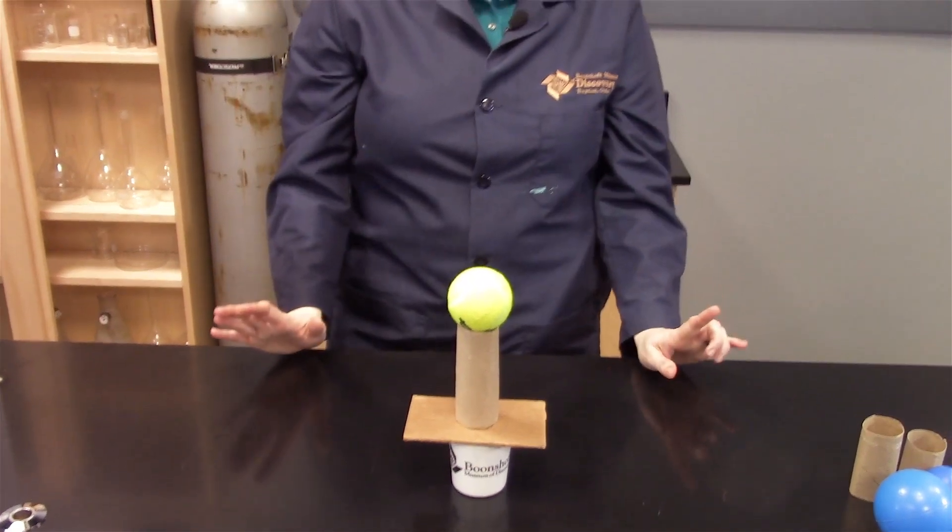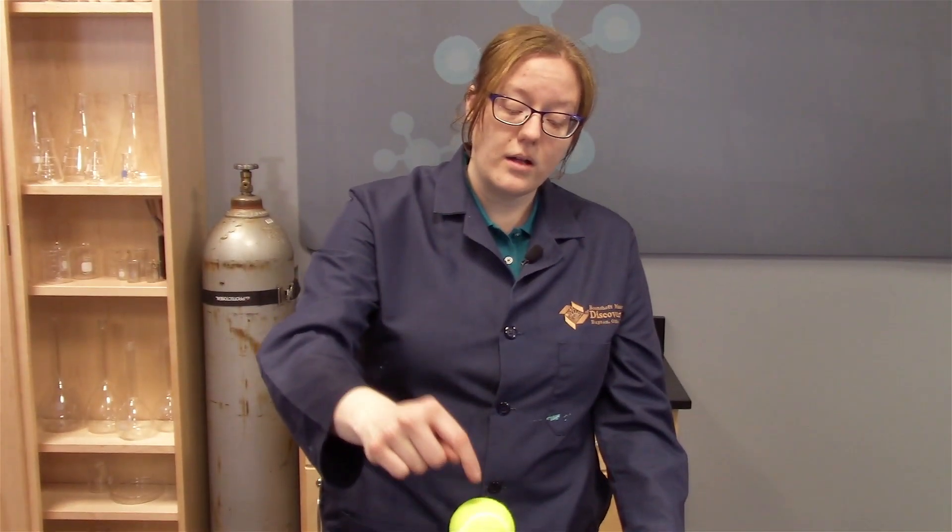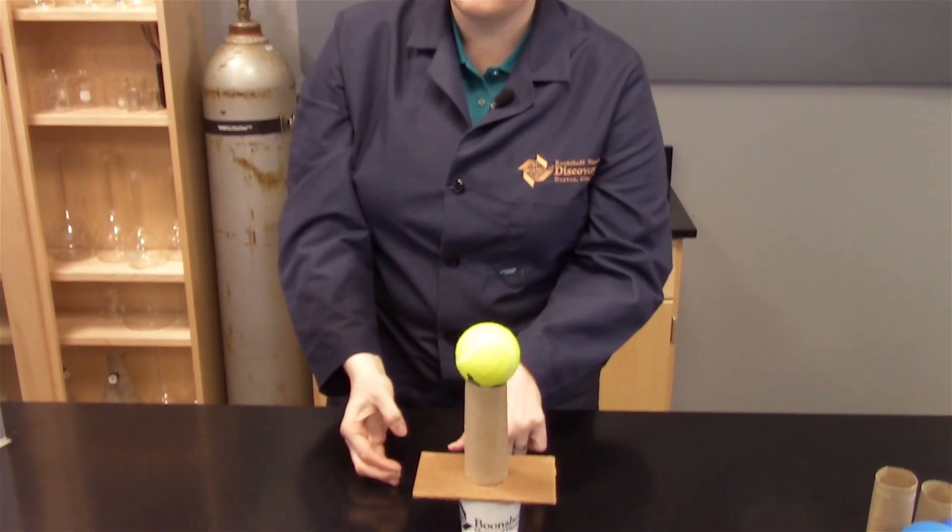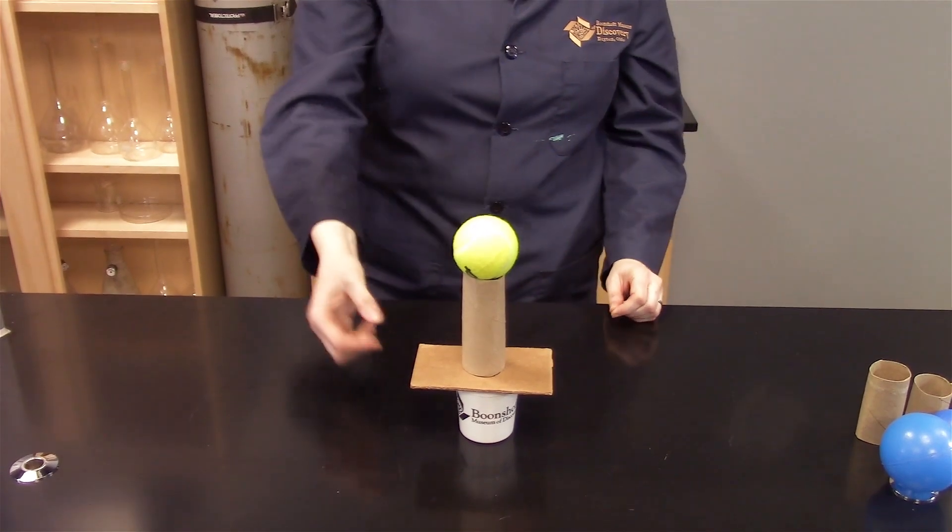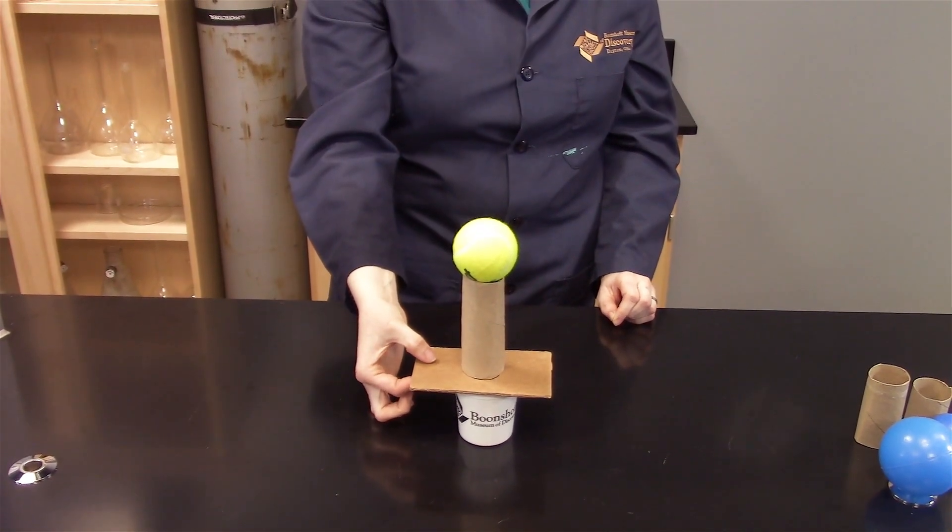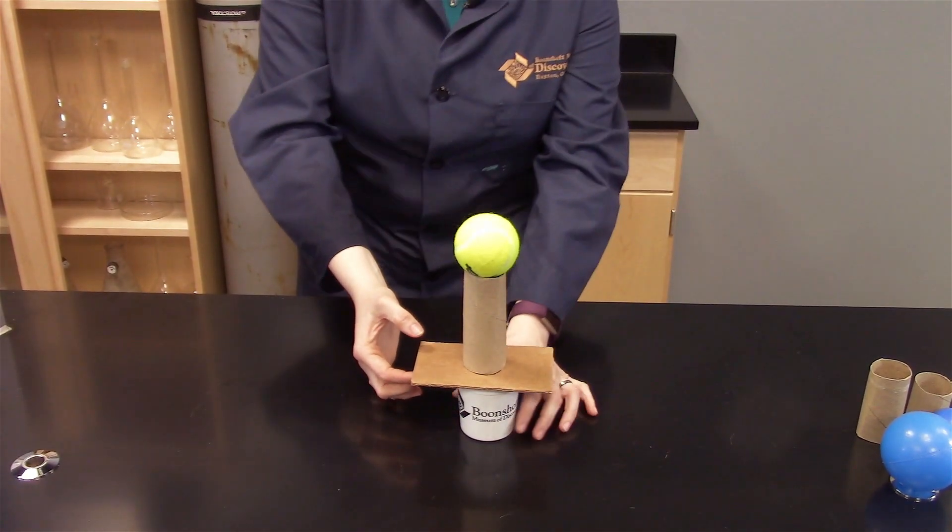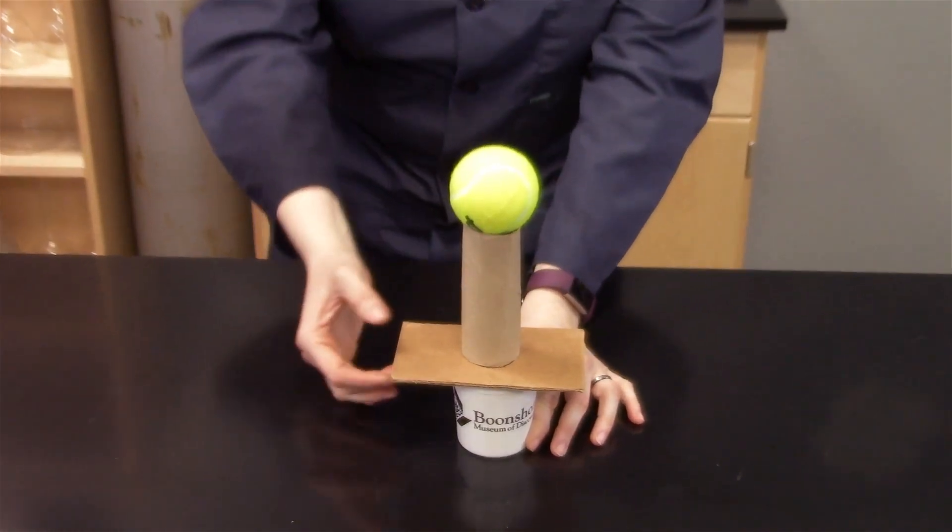The goal of this experiment is to get the ball to fall straight down from the force of gravity into my cup. So I'm going to do that by only pulling on this piece of cardboard here. So I'm going to hold my cup and I'm going to try it.